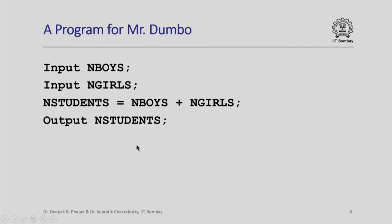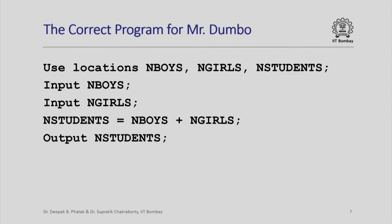But wait for a minute. If we give this program to Mr. Dumbo, when Mr. Dumbo starts executing the first instruction 'input n_boys', he will ask us: who is n_boys? You never told me you are going to use this name. Please remember we had agreed to use a declaration instruction. If we include that, the program will look like this: 'use locations n_boys, n_girls, n_students.' It is this declaration which makes Mr. Dumbo take these names and put them as tags on three memory locations. The rest of the program is of course very easy to understand.